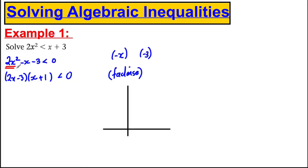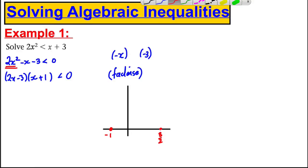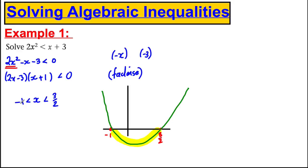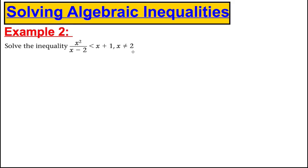It's a positive x squared graph, so it's U-shaped, with roots at x equals negative 1 and x equals 3/2. We're looking for where the graph is less than zero, which is the region between the two roots. So the solution is negative 1 is less than x, which is less than 3/2 — any x strictly between negative 1 and 3/2. That's example 1 done.